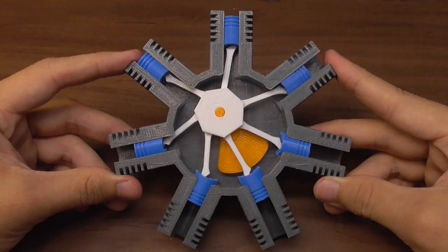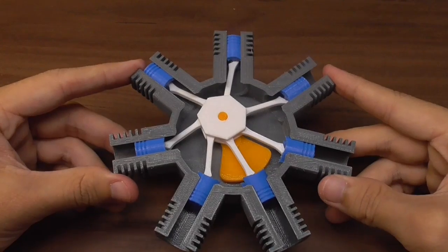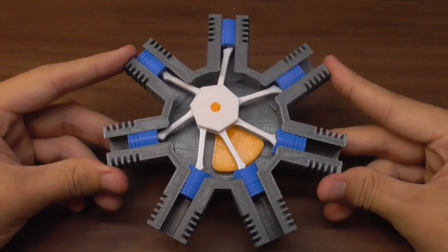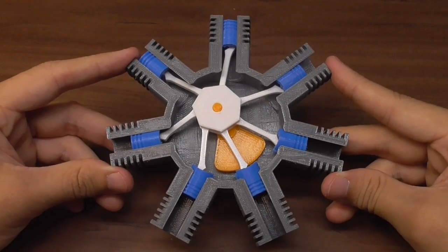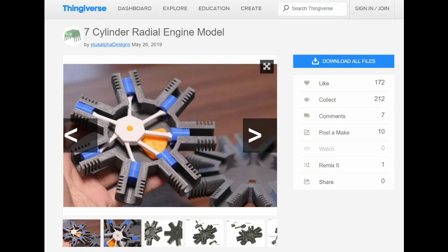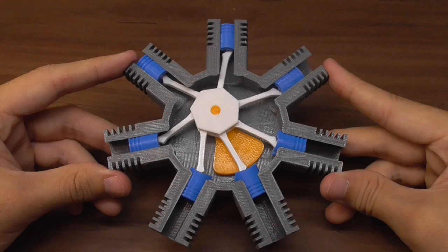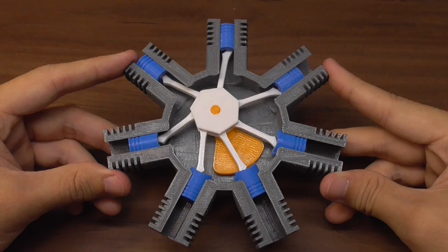I hope you found this video interesting. If you want to modify your eight-cylinder radial engine model or want to make the seven-cylinder model from scratch, the files can be downloaded from the link in the description below. Thank you for watching and see you next time.